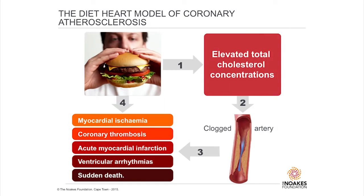To get back to the Ancel Keys model of coronary atherosclerosis, in simple terms: you eat saturated fat, point one it raises your blood cholesterol concentration, point two that clogs your arteries, and point three the clogged artery then causes myocardial ischemia. Now recall that this model was developed on only stage four.